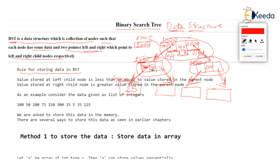Suppose we want to store 25 in the tree. First you compare 25 with 100, the topmost node. 25 is less than 100, so it goes to the left. But left of 100 is already occupied by 50. Then 25 is compared with 50 — and since 25 is less than 50, it is added to the left of 50.